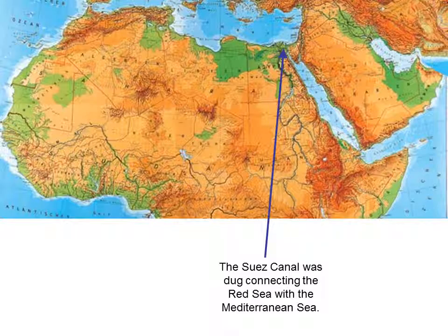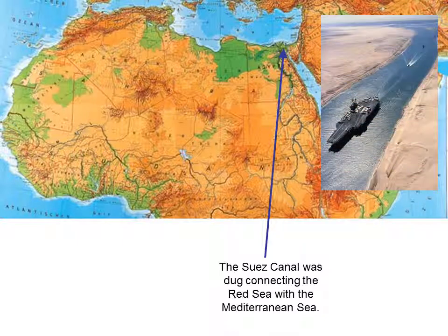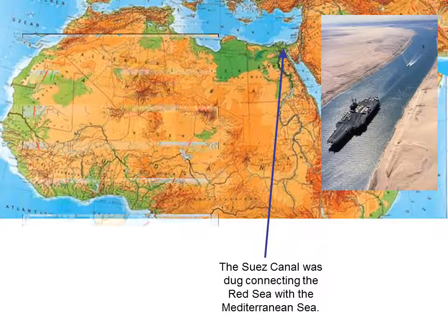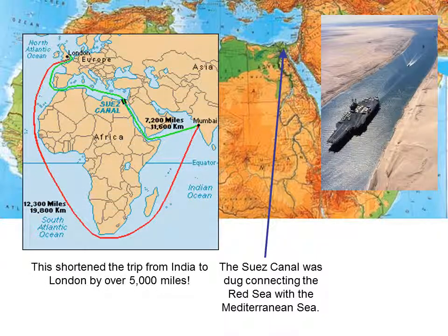The Suez Canal was dug to connect the Red Sea, which leads to the Indian Ocean, with the Mediterranean. Here is an American aircraft carrier traveling through it. The Suez Canal shortened the trip from India to London by over 5,000 miles.